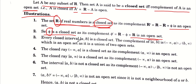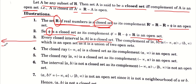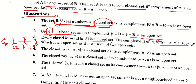अब हम proof कर रहे हैं कि closed interval, closed set होता है। जैसे कि आपने last video में proof किया था कि open interval open set होता है। Number line पर देखो: minus infinity, point A, point B, और plus infinity। Closed interval [A, B] का complement निकालना है, मतलब उस part को delete कर देना है। तो open interval (B, ∞) और open interval (-∞, A) की union आएगी। Open subsets की union open set होती है, इसलिए complement open आगया, इसलिए set closed prove हो गया।